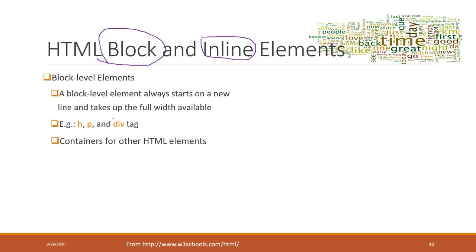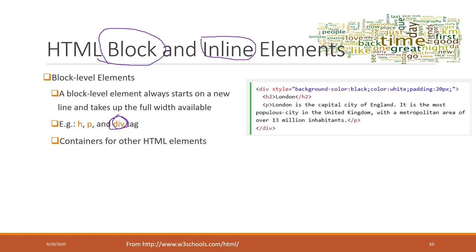The most common one is called the DIV tag. The DIV tag is the most commonly used container of block elements for other HTML elements. For example, here we have a DIV tag that has a heading tag and also a P tag, and then we close the DIV tag. For that DIV tag, we can change the colors like background color and text color and other styles, and we can pass other information into this style attribute. So then all the items within that block element will follow the style that we defined.